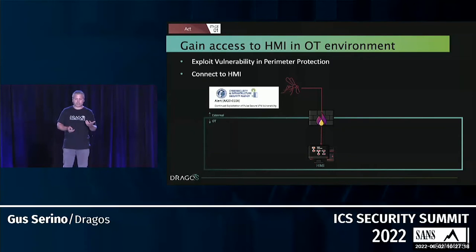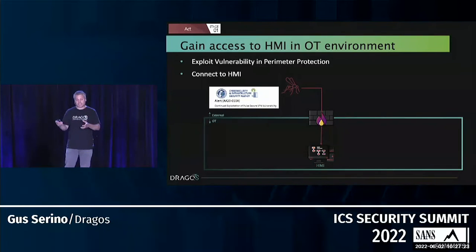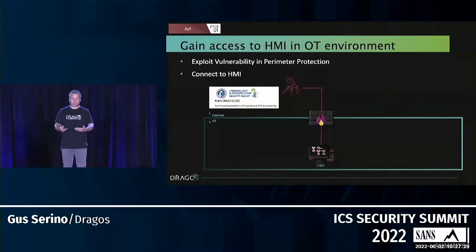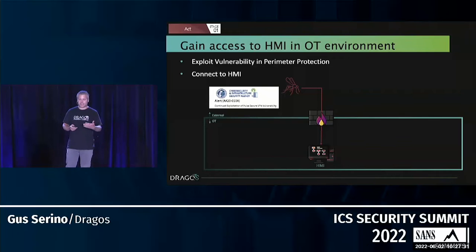The adversary could monitor sessions and was smart enough to only operate when normal users were doing their business. They were in the environment for literally months before an outside entity notified the victim. This highlights the importance of a balanced protection, detection, and response approach. If you think you're covered with MFA and a VPN but you're not doing monitoring and you're not ready to respond, you need to step up.